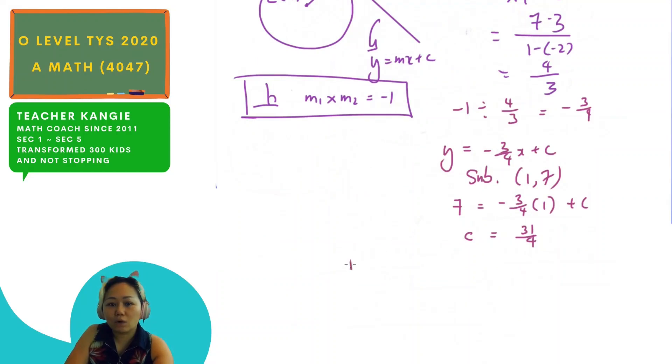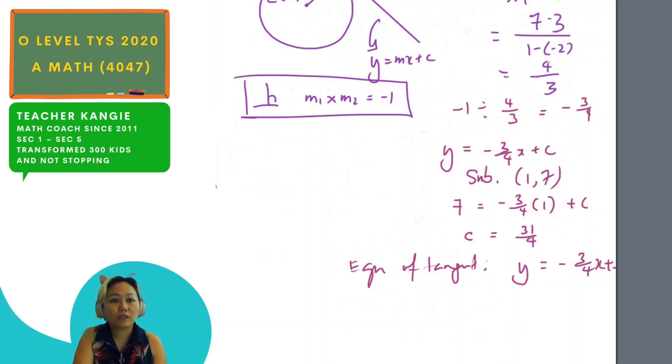So in this case, equation of my tangent, it will be y equals to minus 3 quarter x plus 31 over 4. And this is the answer for question 9, part 2.